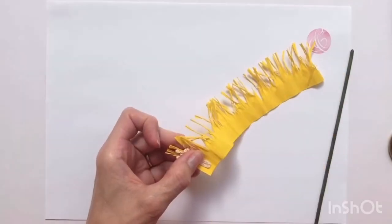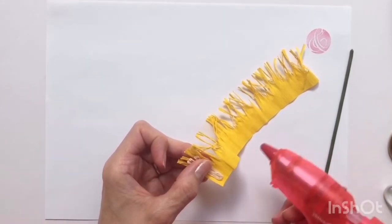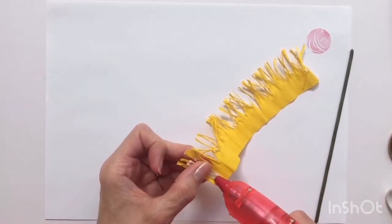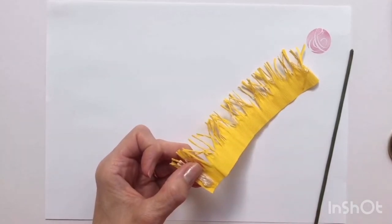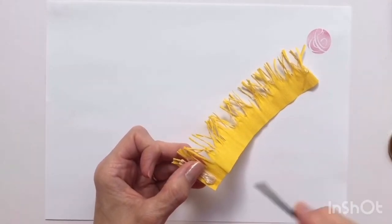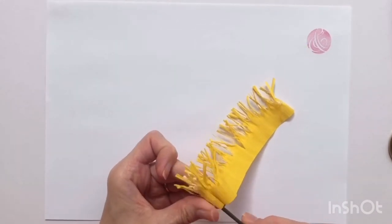Then take your hot glue gun, if you have one. You can use PVA glue, but you'd need to leave it to dry a little bit longer than you do with hot glue. Put a little dollop on the end, place your wire on top, and then just roll it around.